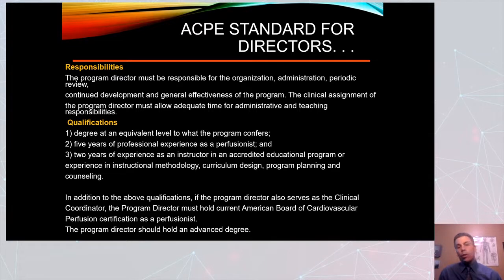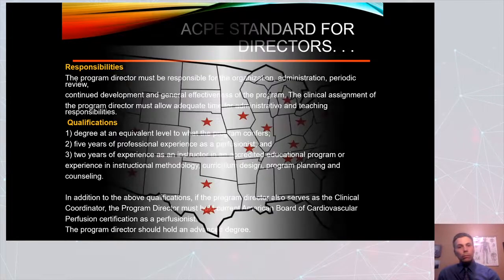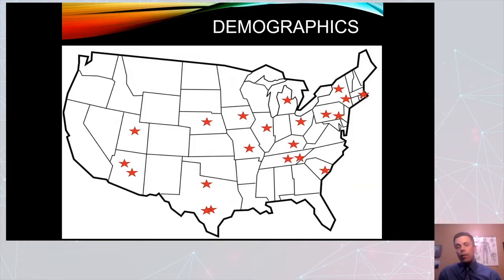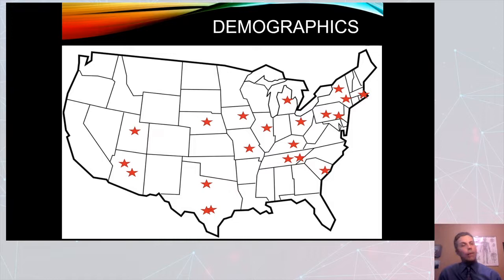The program director should always hold an advanced degree. This is where the programs currently are — this is where each of us kind of resides, our home base for the schools. There are currently 21 programs; some are in the accreditation process and some are fully accredited. In the last two years we've had two programs still in the accreditation process and two new programs, so we're a total of 21 program directors currently on the council, and I believe at this point 19 have voting rights.